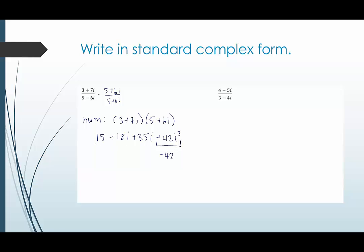If I combine the real parts that would be 15 and negative 42. So that would end up being negative 27. And then the imaginary parts 18i and 35i we add those together we end up getting 53i.